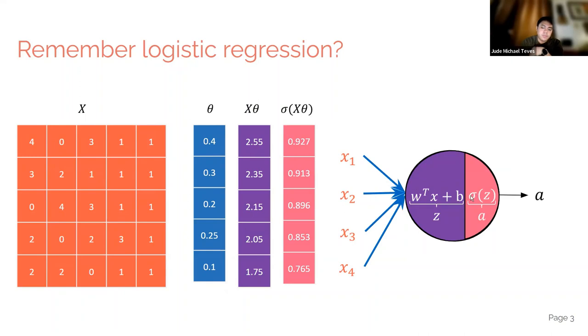So you apply sigmoid to the output of linear regression and then what you're getting is our probabilities. And then you just use an arbitrary threshold, say 0.5. If it's above that then that's true or one, else it's false or zero. So that's logistic regression.